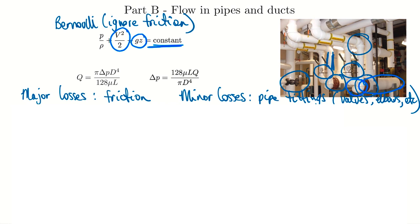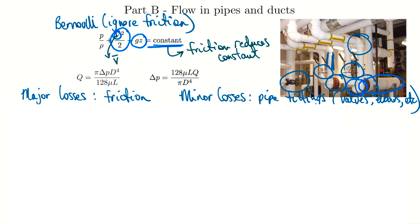Bernoulli is not applicable in the cases we have here, for two reasons. First, what does velocity even mean when you have turbulent or laminar flows with a huge velocity change across the pipe? We'll have to work from some average velocity. Also, we ignored friction in Bernoulli, and friction generates a whole bunch of losses. Essentially, friction reduces the Bernoulli constant, giving us a third thing that changes system pressure. To summarize: pressure can be influenced by changes in velocity, changes in elevation, and now also friction.